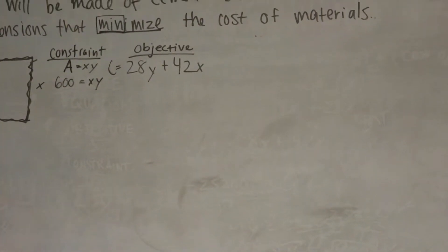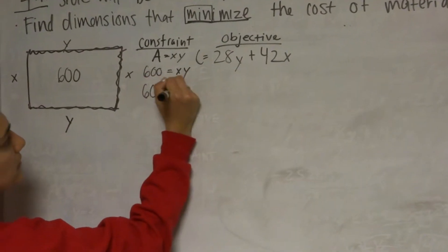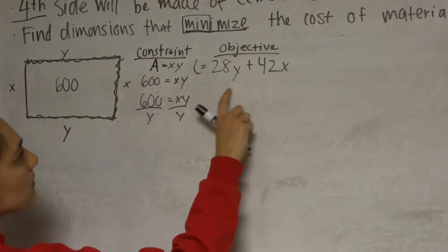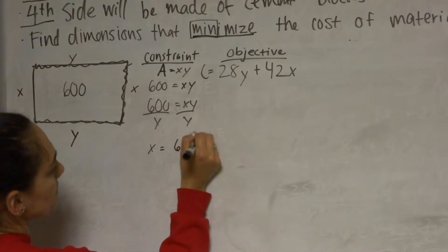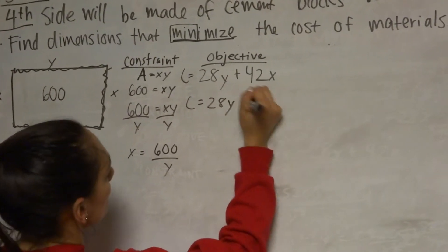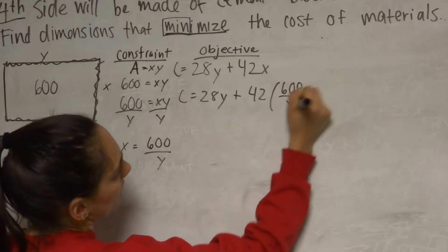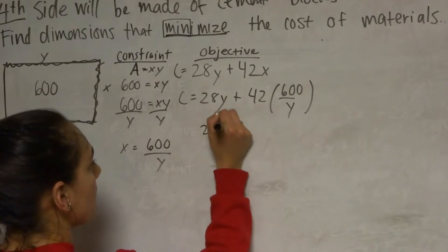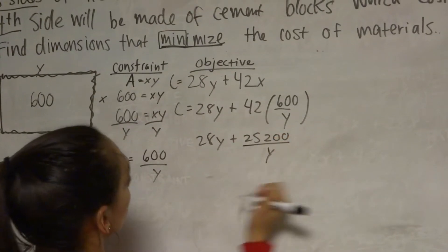Now we want to write the objective equation in terms of either x or y. We can find that using the constraint by dividing by either x or y. I'm going to do y. So now we can write this equation in terms of y by replacing this x with the x that we just solved for, which is 600 over y. We can rewrite this by saying 28y plus 42 times, we're replacing the x with this x, 600 over y. And if you multiply that out, you get 28y plus 25,200 over y equals cost.